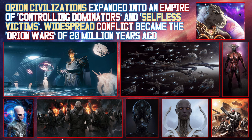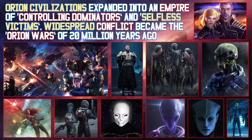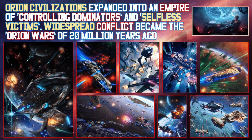The empire became technologically advanced while in deep spiritual conflict. Widespread conflict became the Orion Wars of 20 million years ago. The Orion Wars lasted for eons and had many similarities with the Star Wars movies. A resistance group formed, but force was met with force, resulting in a stalemate. The Pleiadians stepped in to zealously counter the negativity of the Orion Empire. The empire struck back and destroyed a populated Pleiadian planet, and the Pleiadians withdrew from the conflict.